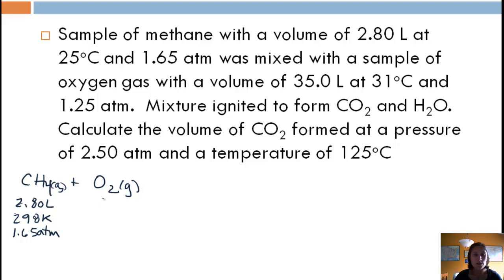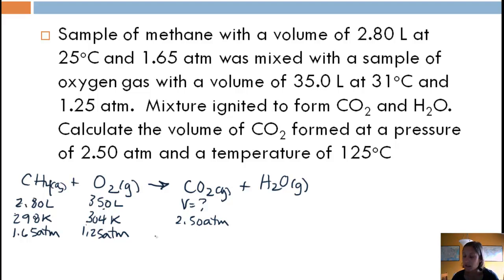Okay, oxygen gas, volume is 35 liters, 31 Celsius is 304 K. Remember, we're just adding 273, and it's 1.25 atmospheres. Okay, the mixture was ignited, and it formed CO2 and H2O. Calculate the volume of CO2 formed at a pressure of 2.50 atmospheres and a temperature of 125 Celsius, which comes out to be 398 K.